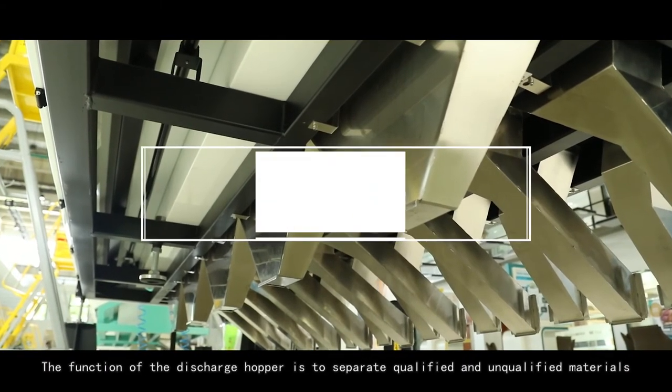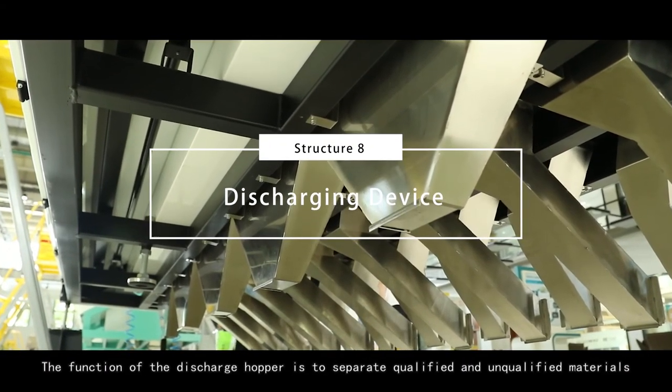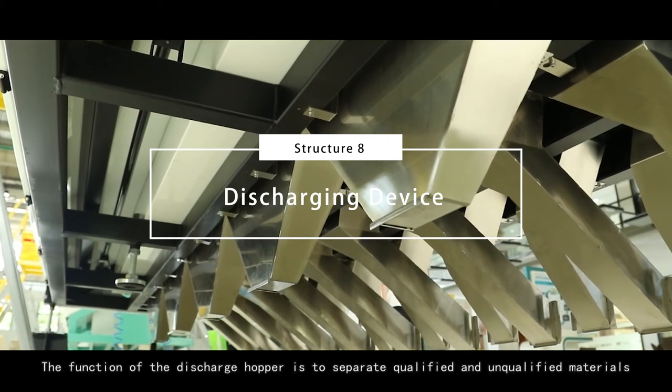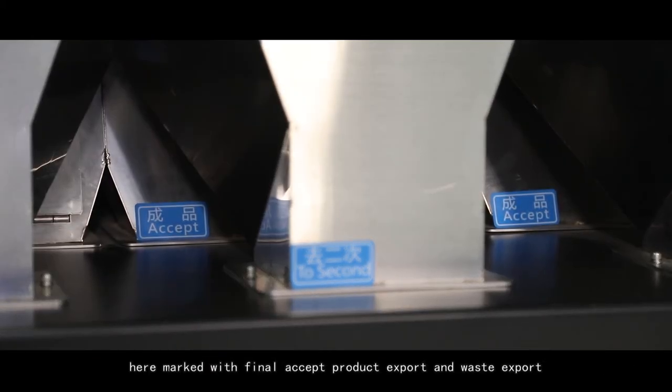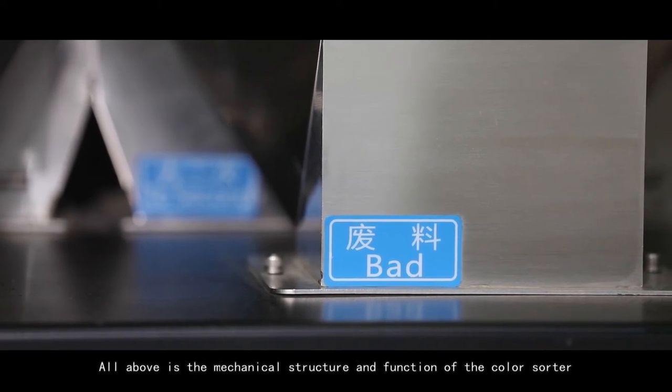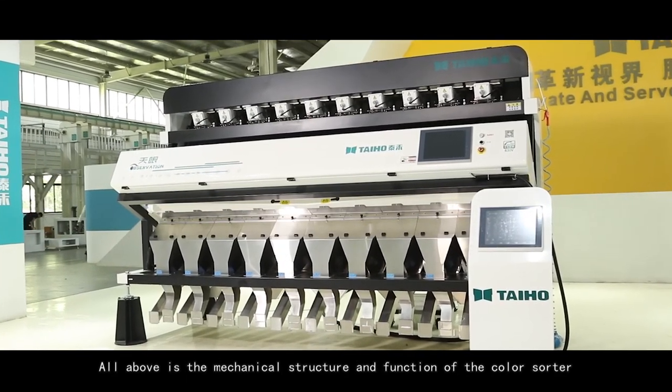Discharging device. The function of the discharge hopper is to separate qualified and unqualified materials. Here marked with final accept product export and waste export. All above is the mechanical structure and function of the color sorter.